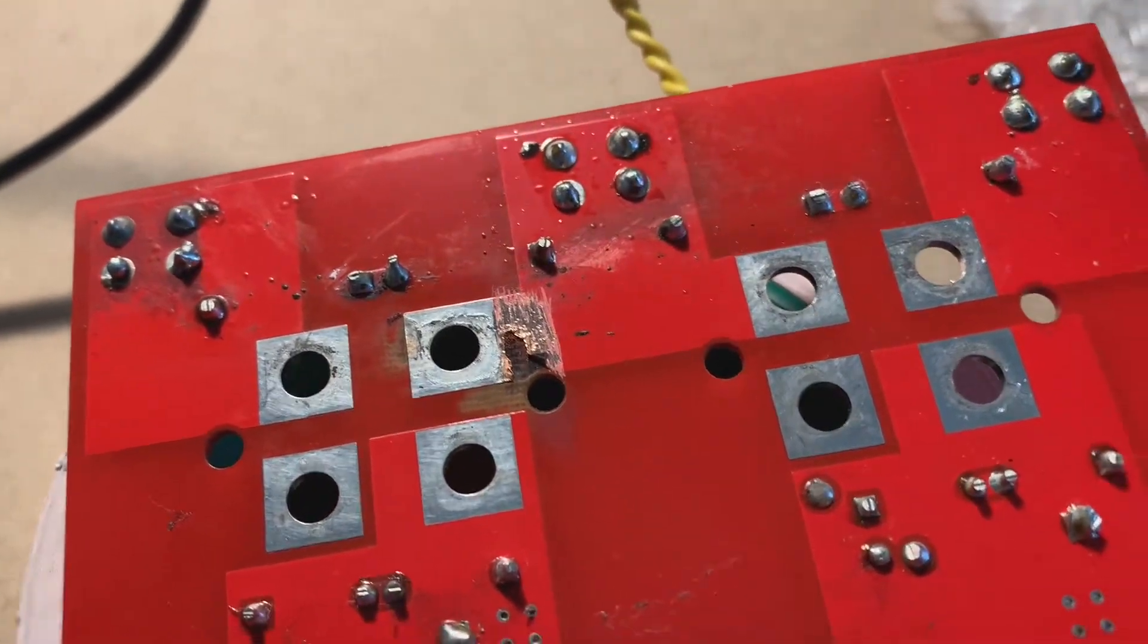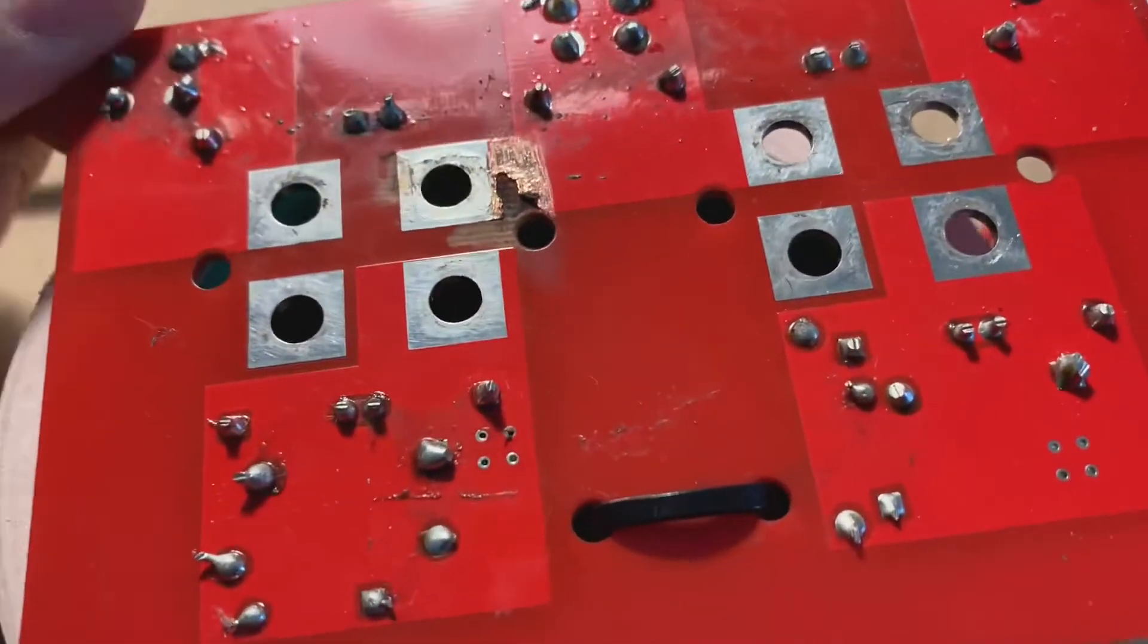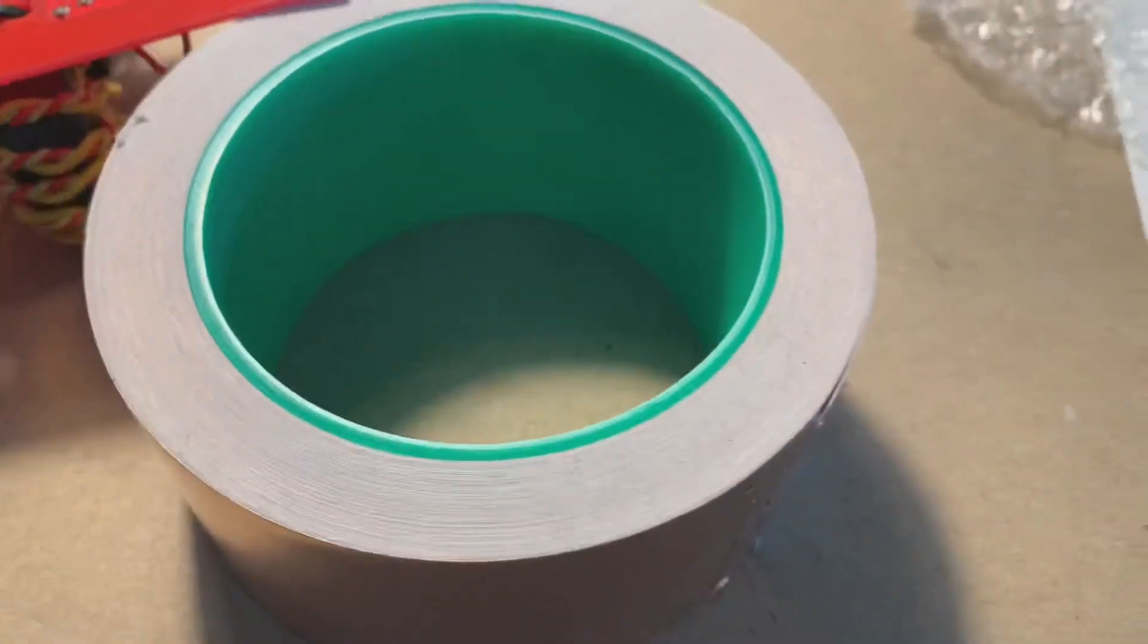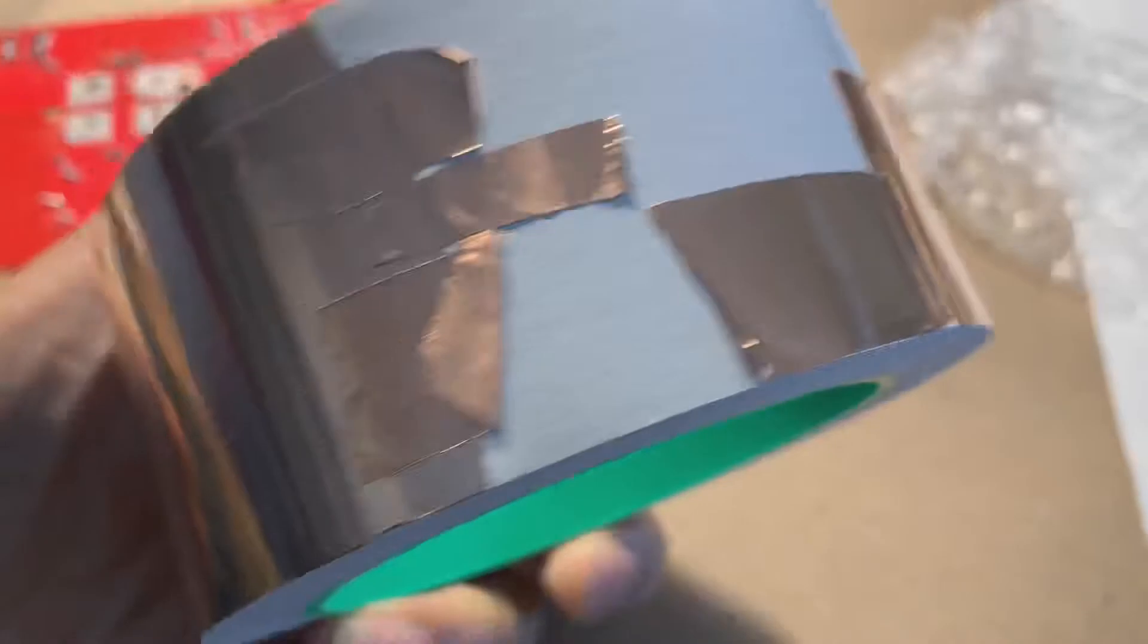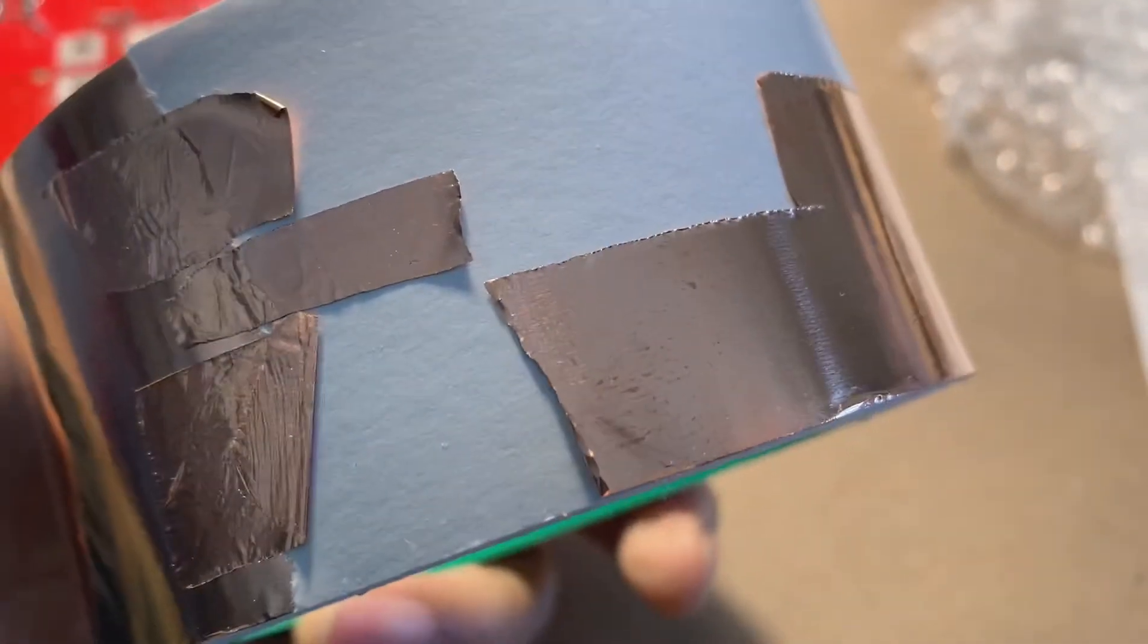Now the trick to fixing this is very simple. Let me show you. Here we have a tape. This is actually adhesive copper tape and this is going to be key to fixing that blown trace.